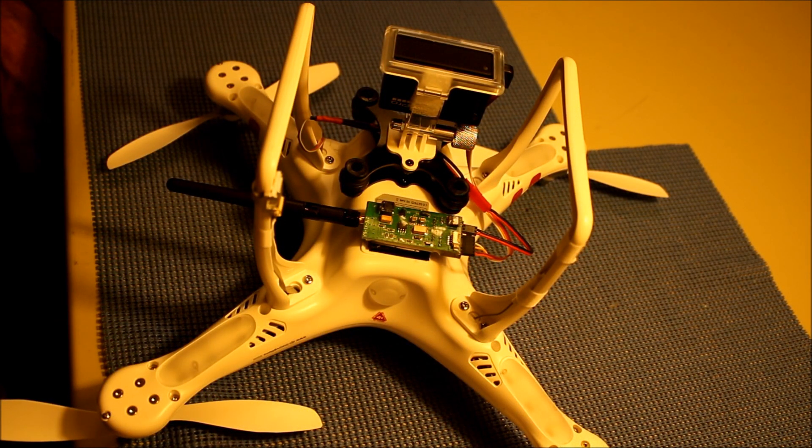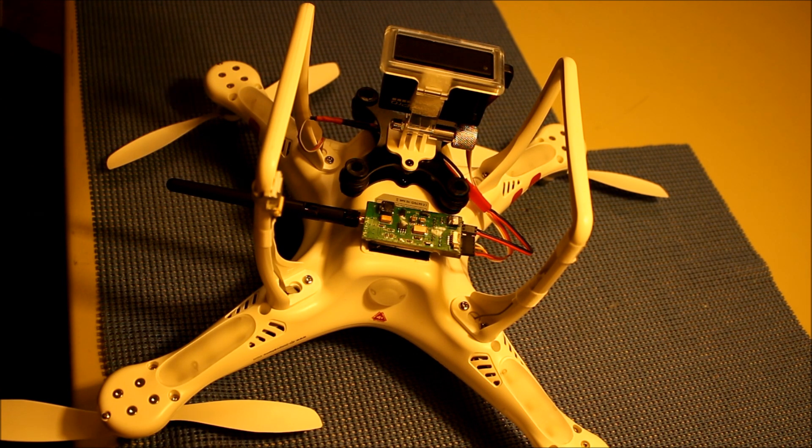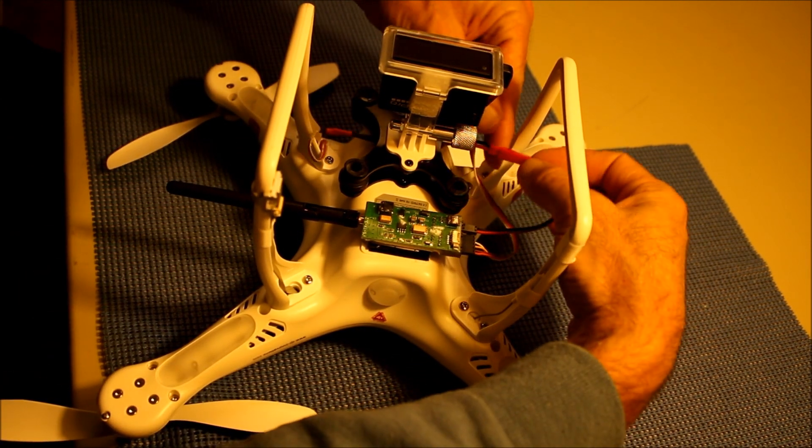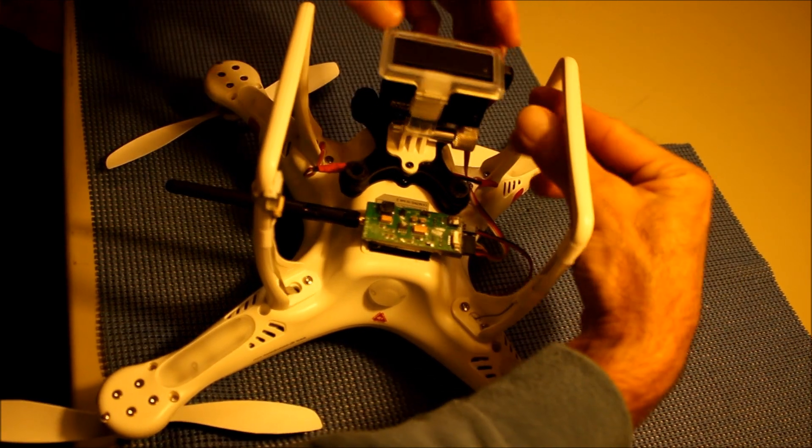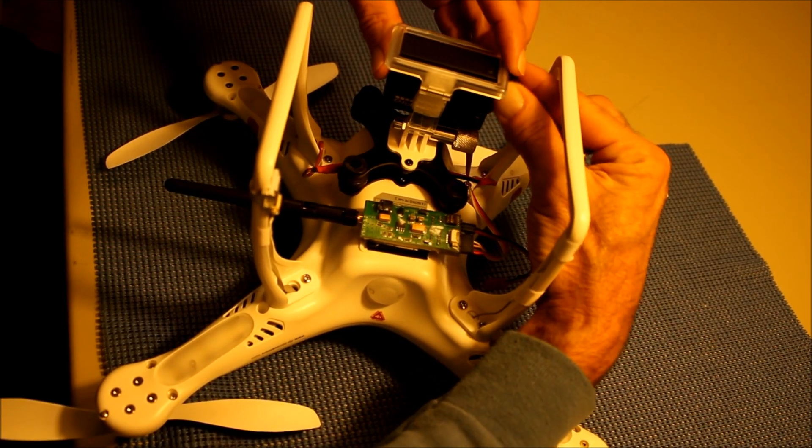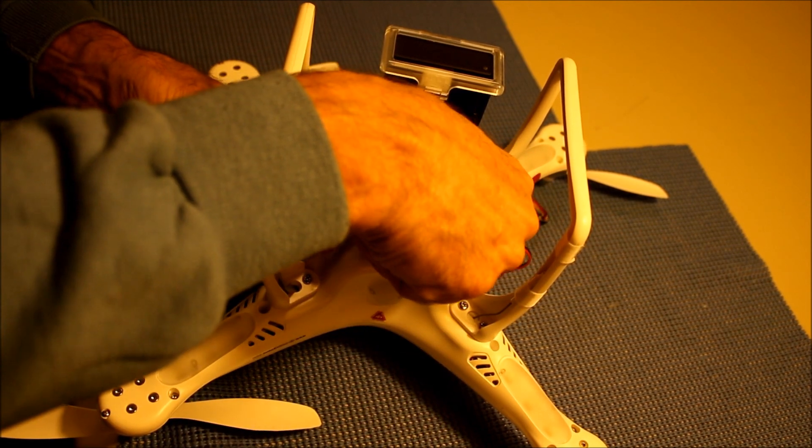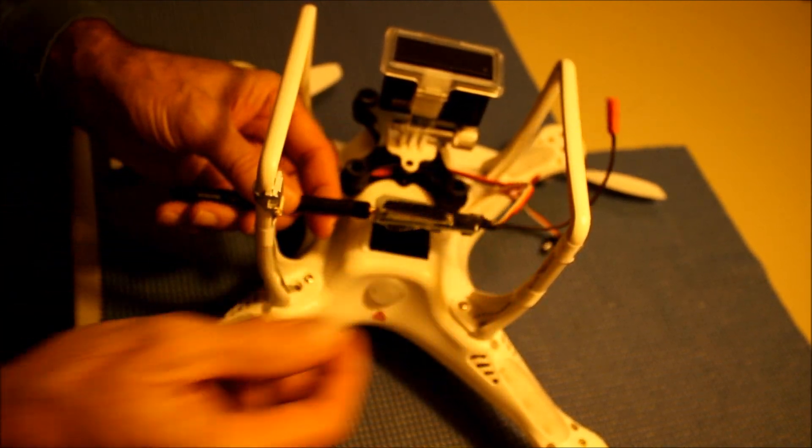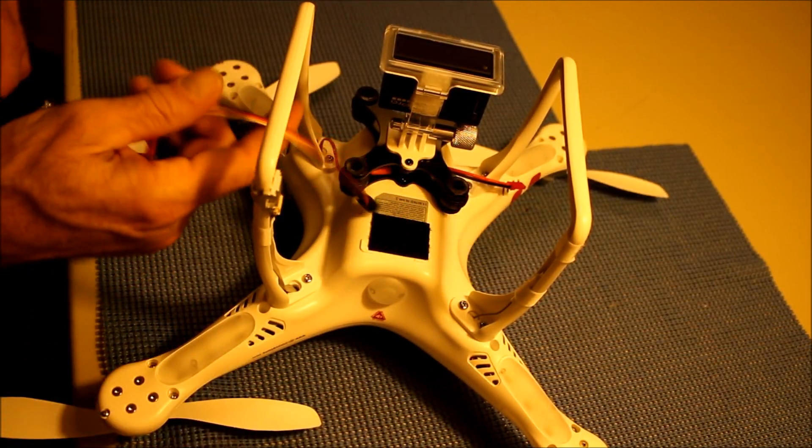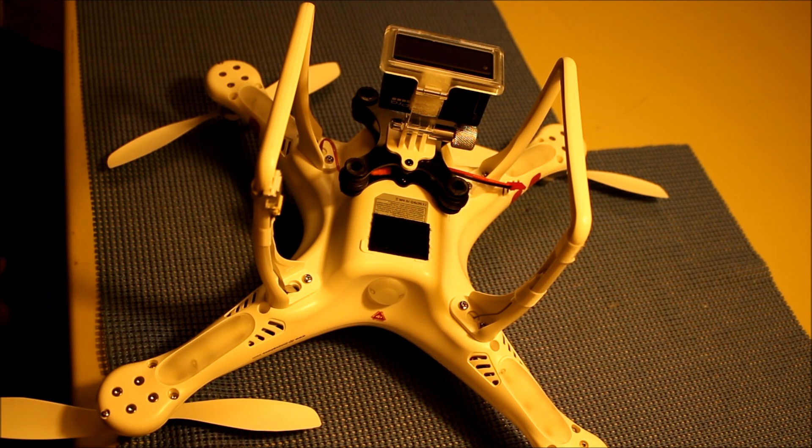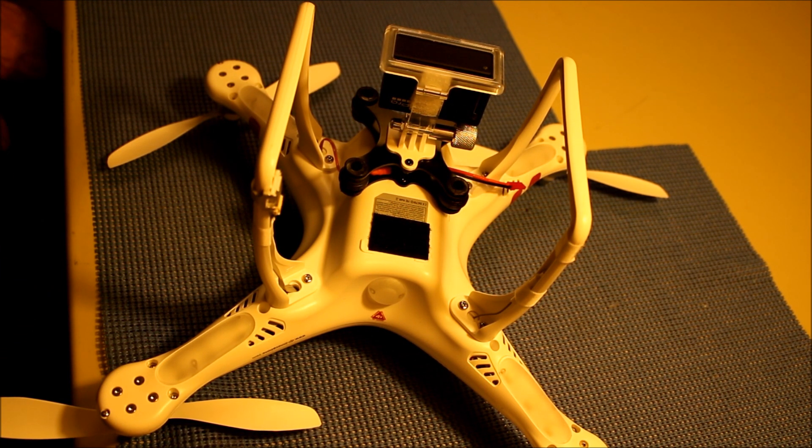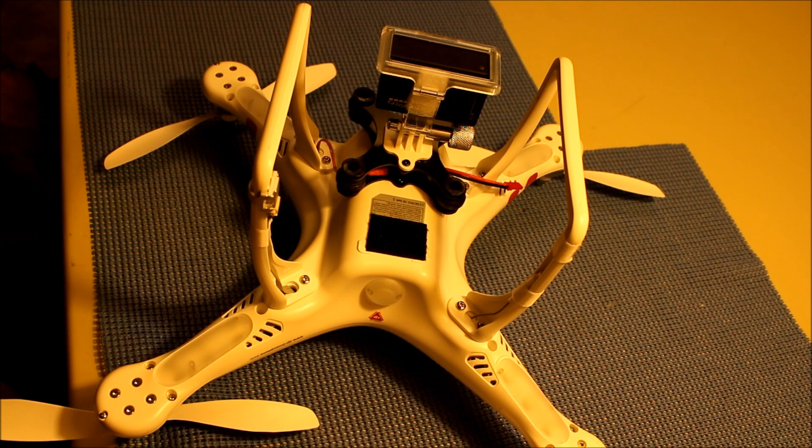If I wanted to fly without the Fatshark goggles, all I have to do is disconnect the power cable, disconnect the camera cable, and then take the transmitter board off its Velcro. And I could fly without the goggles. I hope you enjoyed the video.